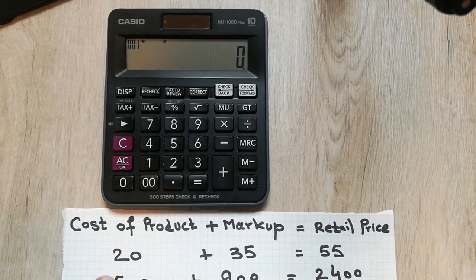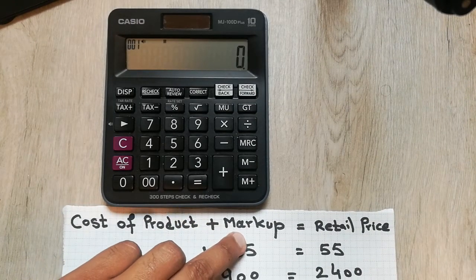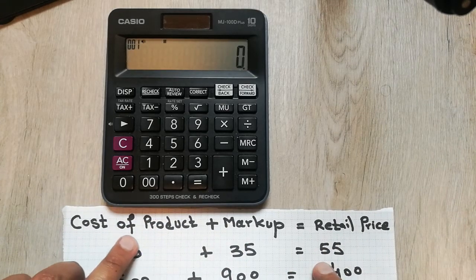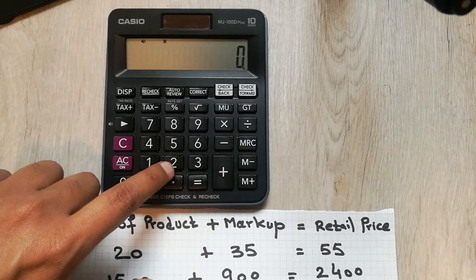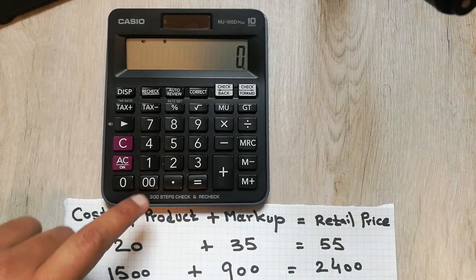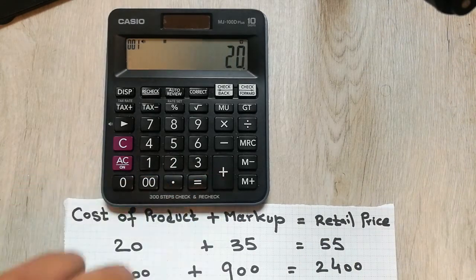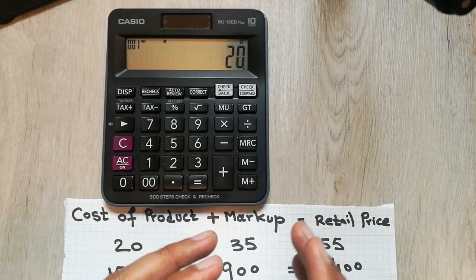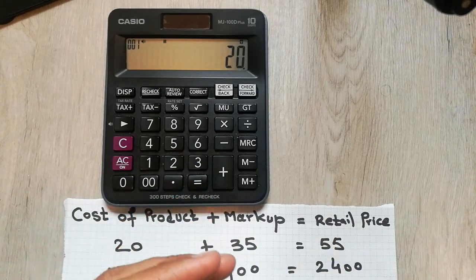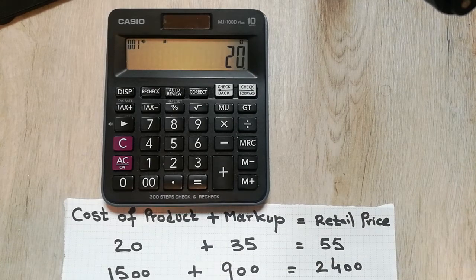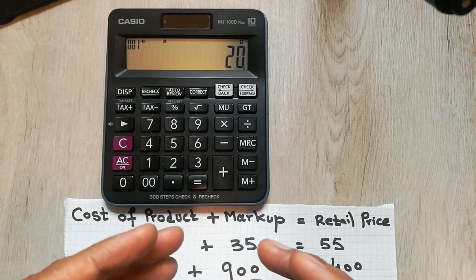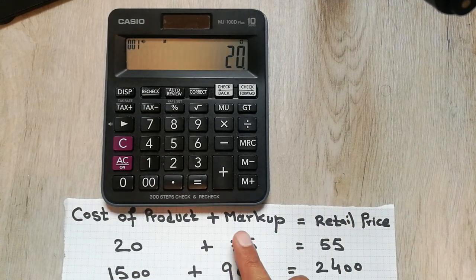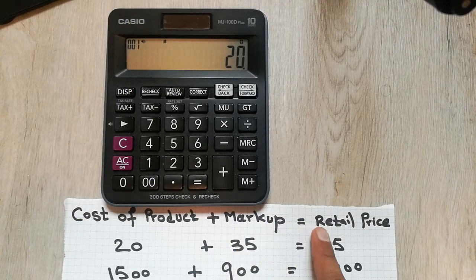The formula I'm showing you is: Cost of Product + Markup = Retail Price. The cost of product is the item you purchase from the wholesale market — let's say it is 20 rupees or whatever currency. Markup is like operational cost — how much you spend on petrol to go and buy the product — plus the profit you want to earn. So operational cost plus profit together make up the markup.